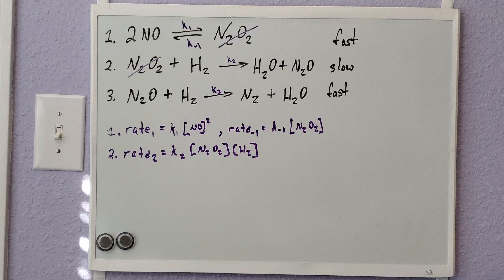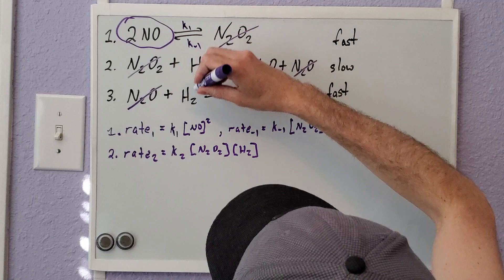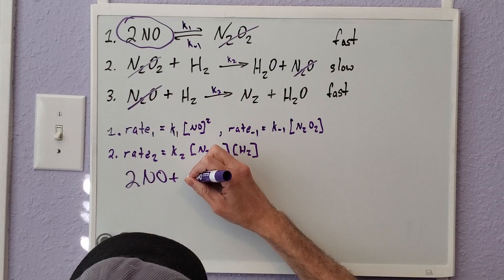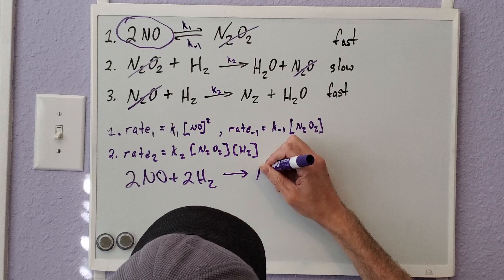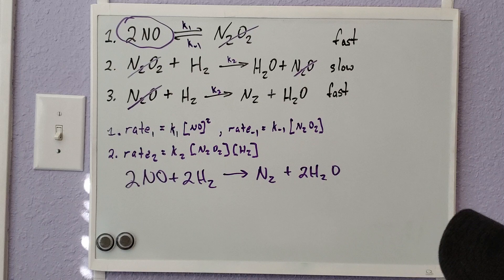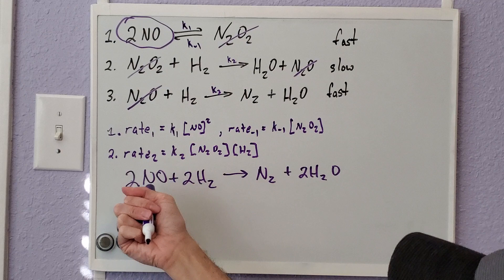After cancellation, the overall equation becomes 2NO + 2H2 → N2 + 2H2O. However, there's a problem: rate laws can only contain reactants, and H2 is a reactant but N2O2 is not — it's an intermediate. Therefore this rate law does not work for the overall equation as written.